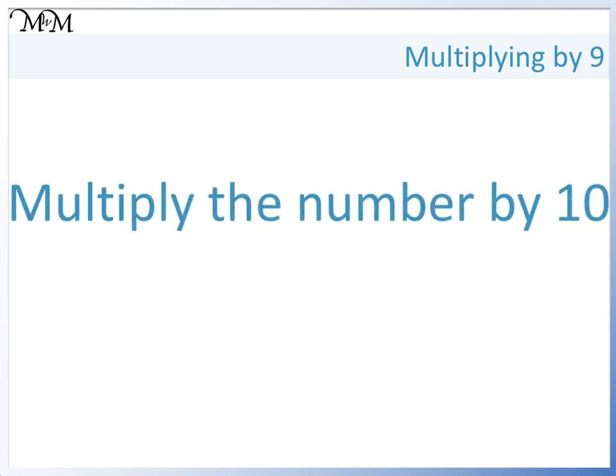9 is very close to 10 and 10 is a very easy number to multiply by. So step 1 is to multiply the number by 10. This will give us 10 lots of the number. We only want 9 lots, so step 2 is to take away the number.